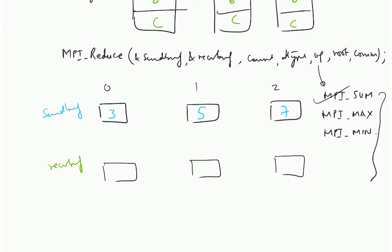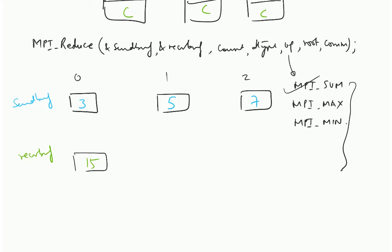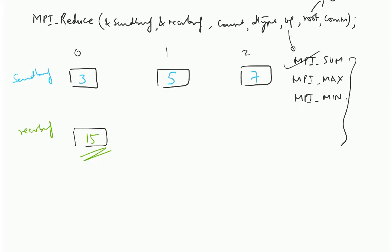Let us just take the example of sum. If the operation specified is sum, then at the end what are you going to get? We are talking about reduce operation. So reduce operation has a root. If the root is 0, then you are going to get the value 15 on processor 0. Processor 1 and 2 are not going to get anything.